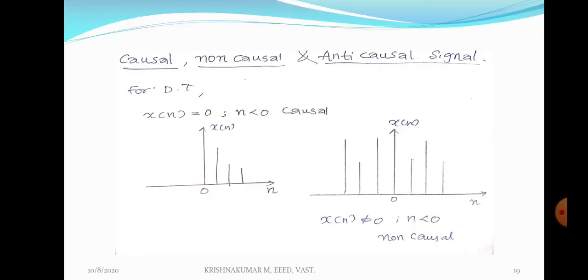Further explanation about causal, non-causal, and anti-causal signal. For a discrete time signal, x(n) is equal to 0 when n less than 0 — it will be a causal signal. For a continuous time signal, x(t) is equal to 0 when t less than 0. Causal signal is a right-handed signal, irrespective of whether it is continuous or discrete. x(n) not equal to 0 when n less than 0 — that is a non-causal signal.